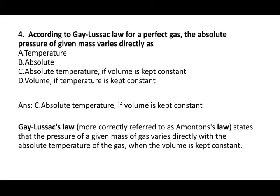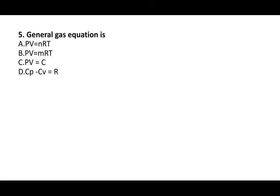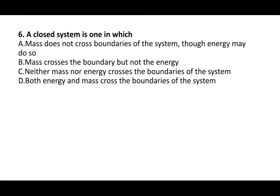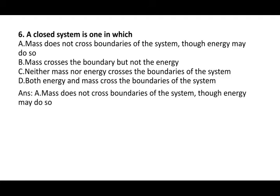Gay-Lussac's law states that the pressure of a given mass of gas varies directly with the absolute temperature of the gas when the volume is kept constant. Next question: the general gas equation is PV = mRT. Next question: a closed system is one in which mass does not cross the boundaries of the system, though energy may do so. Mass will not transfer; energy will transfer.